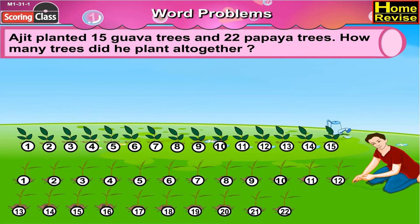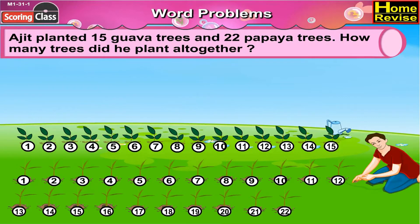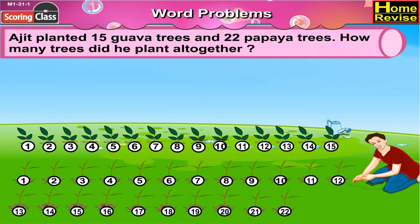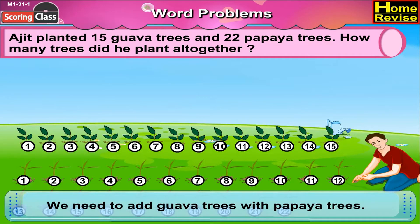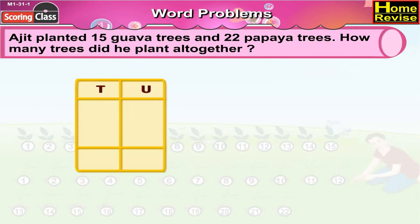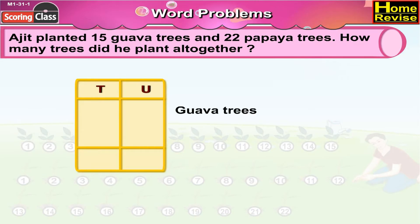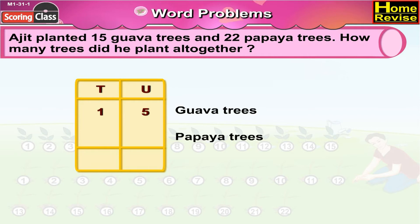How many trees did he plant altogether? In order to find the total number of trees, we need to add guava trees with papaya trees. Ajit planted guava trees: 15. Ajit planted papaya trees: 22.